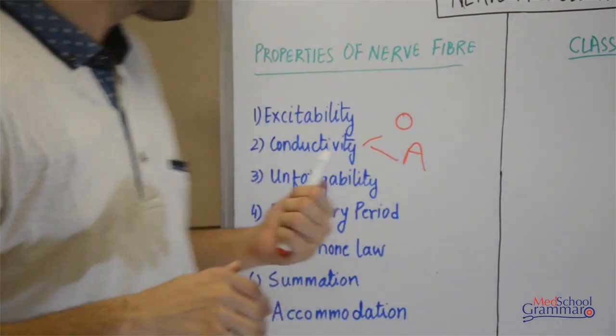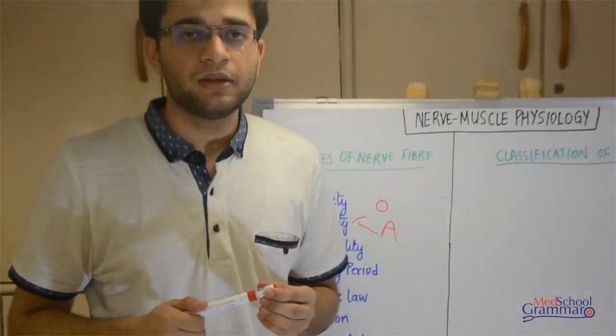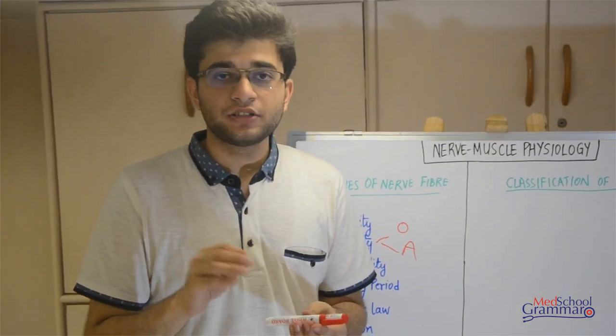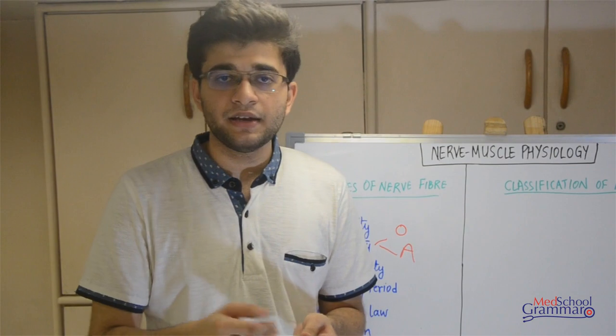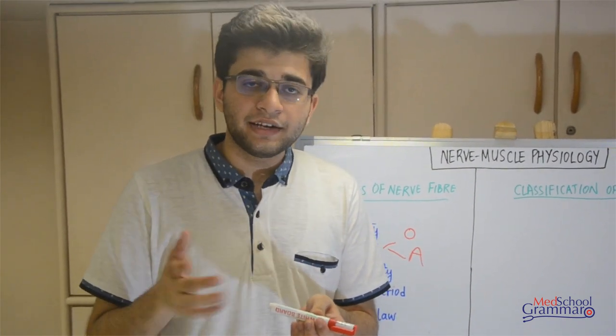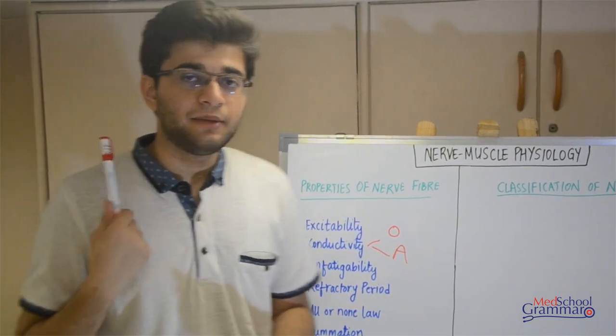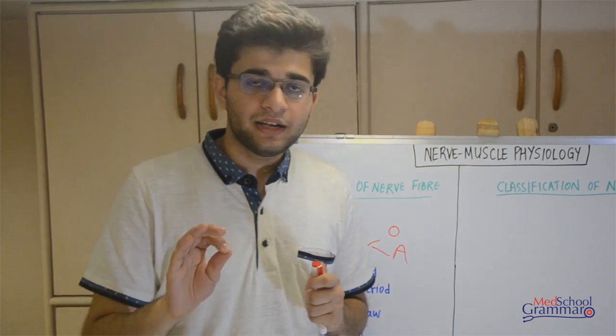The third property is unfatigability. Nerve fibers are unfatigable because ATP is not directly involved in impulse transmission. Impulse transmission is an electrical event occurring due to ion exchange. This exchange of ions can continue for a long period without fatigue.